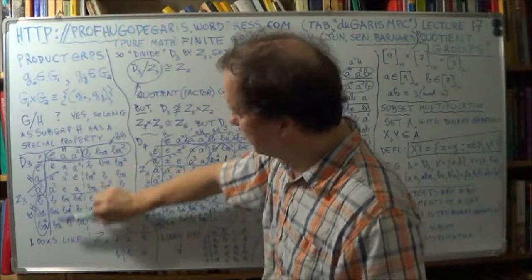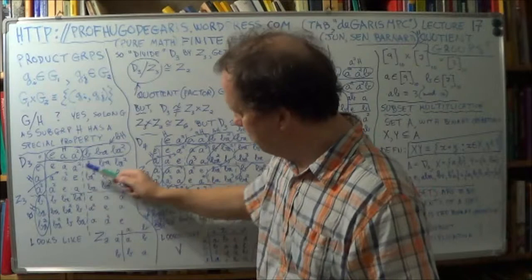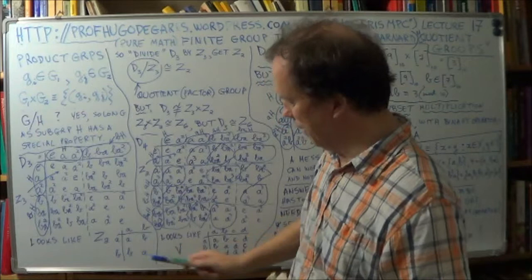Rather than 36 entries. You just, so this group here, it looks a bit like Z2, of this form. You know, A, B, B, A, right? A, B, B, A.